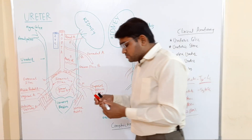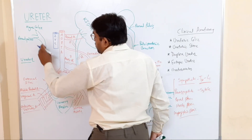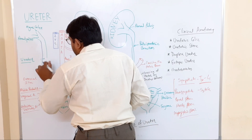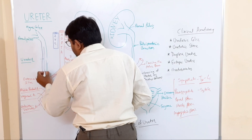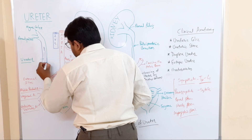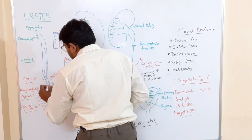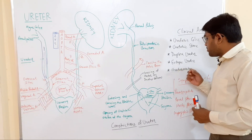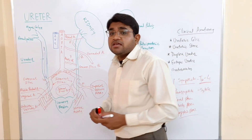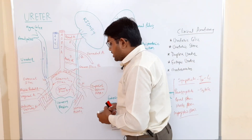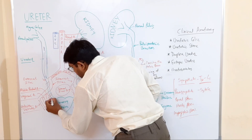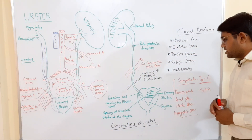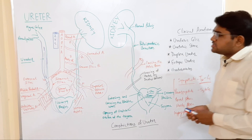Some anomalies of the ureter: duplex ureter — the ureteric bud divides and two ureters are present from the renal pelvis instead of one; these two ureters eventually merge and form a single final ureter. Ectopic ureters — normally ureters open at the lateral angles of the urinary bladder, but sometimes they may open at the lower or anterior parts instead.